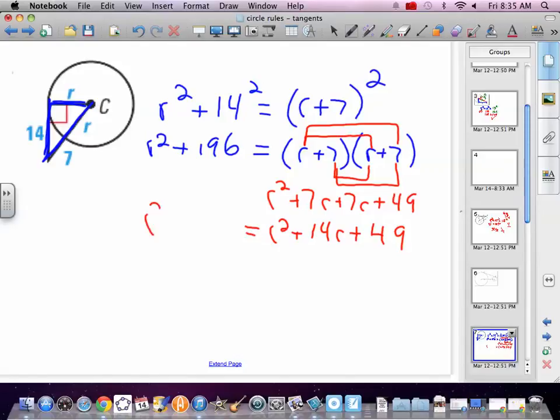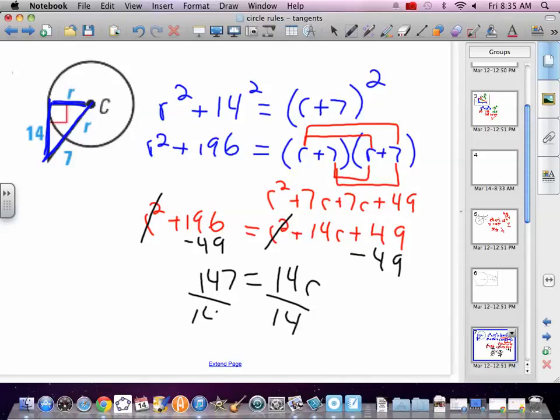So, now we've got something to solve. There's an R squared on both sides. So, they will actually cancel each other. We want to get numbers on one side, letters on the other. So, again, back to some basic algebra. 147 equals 14R. R is 10 and a half.